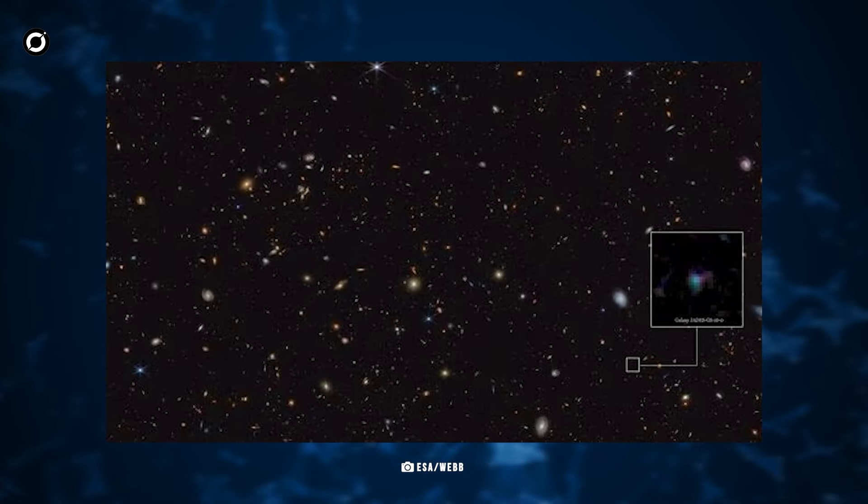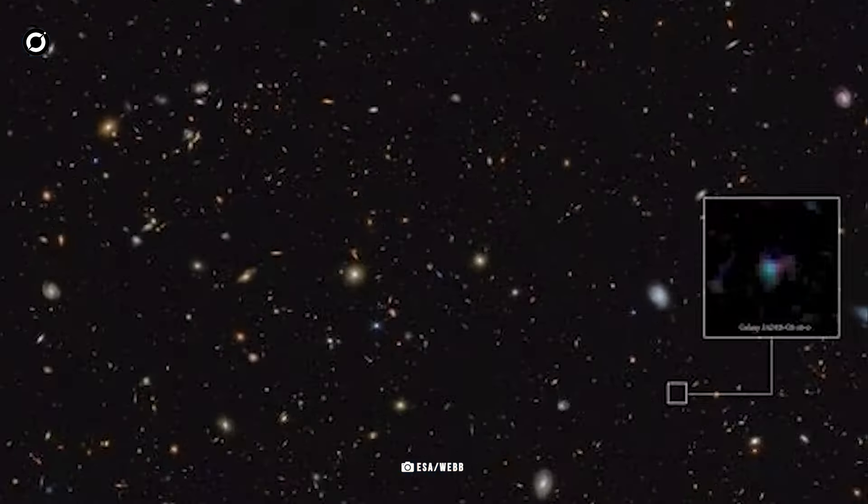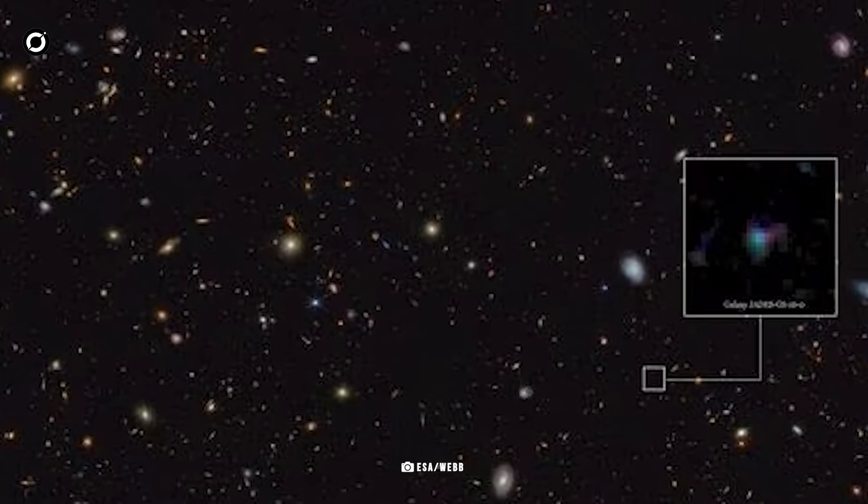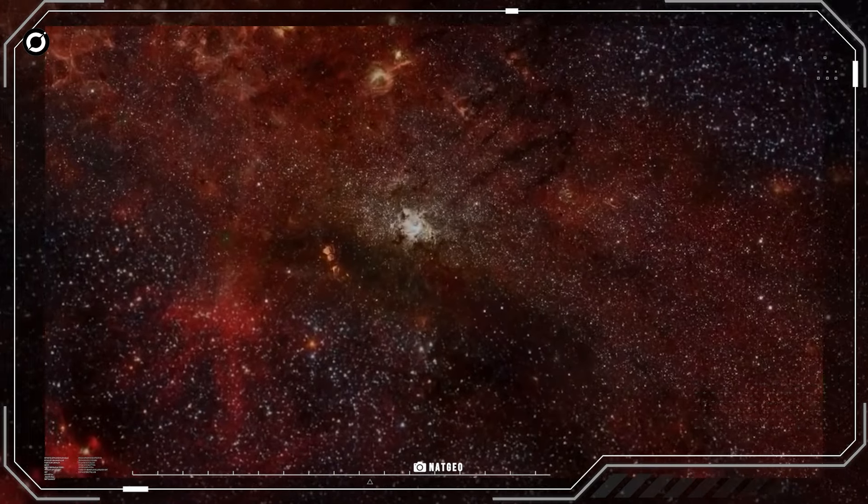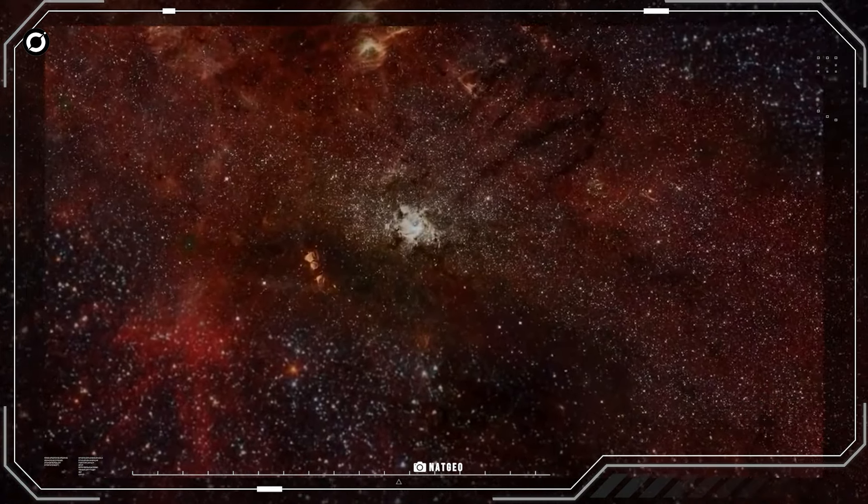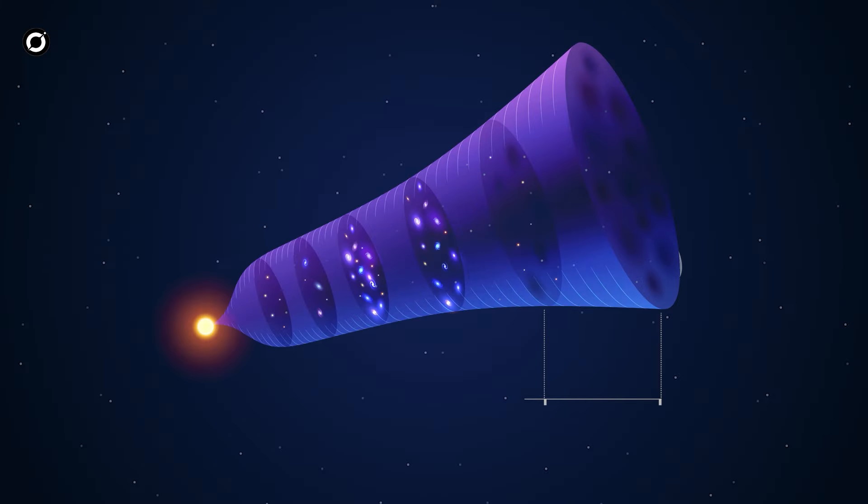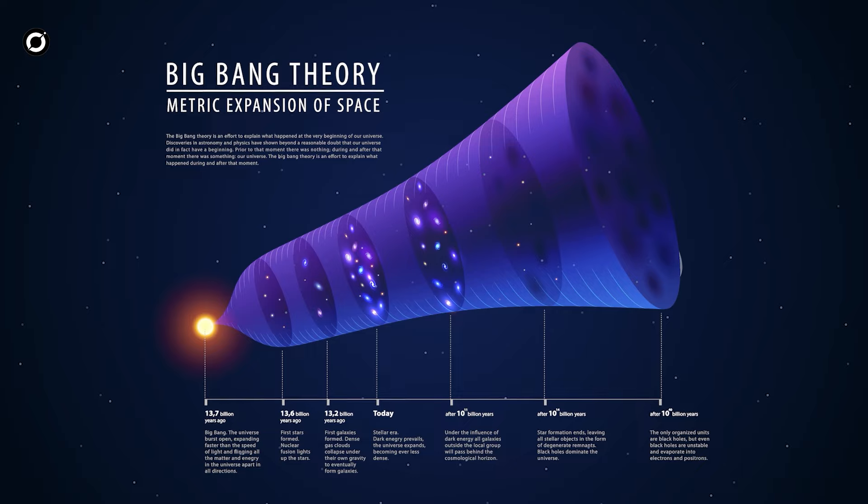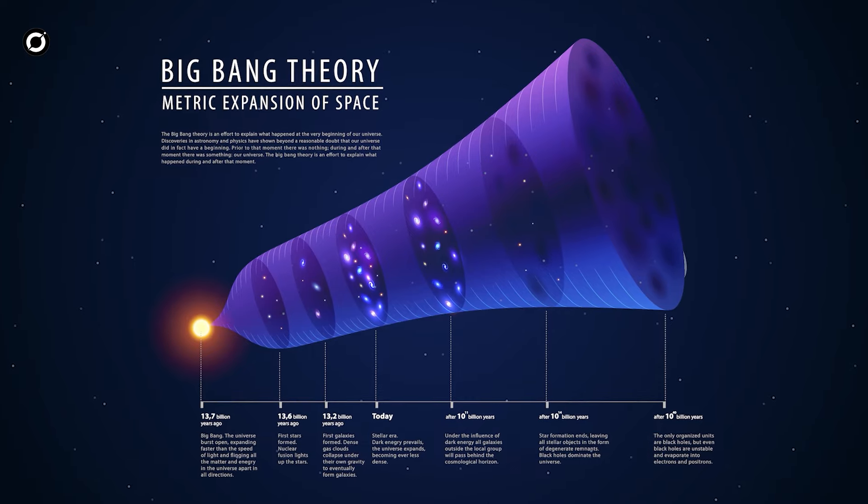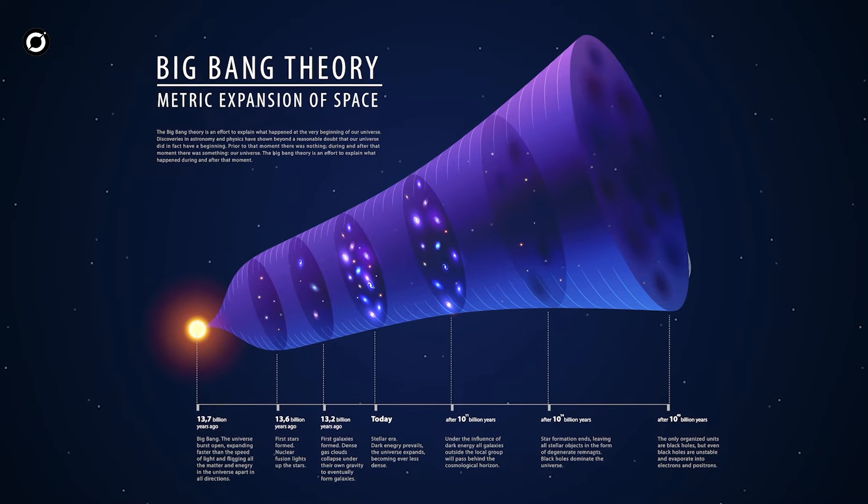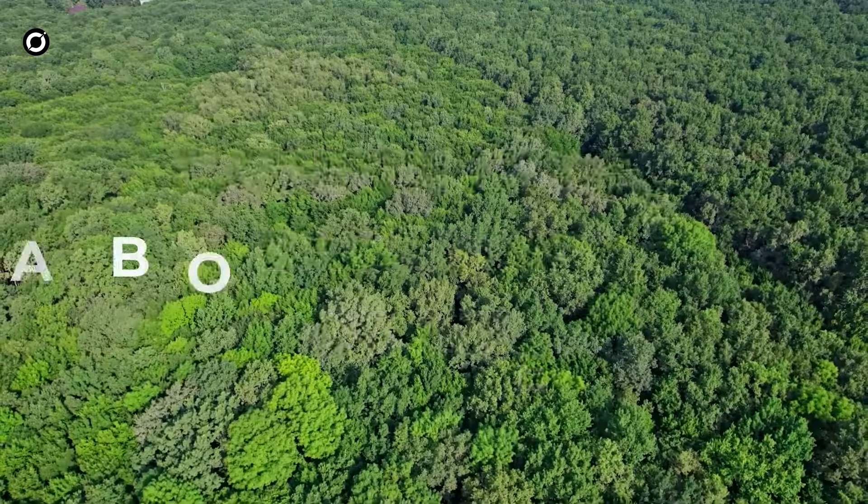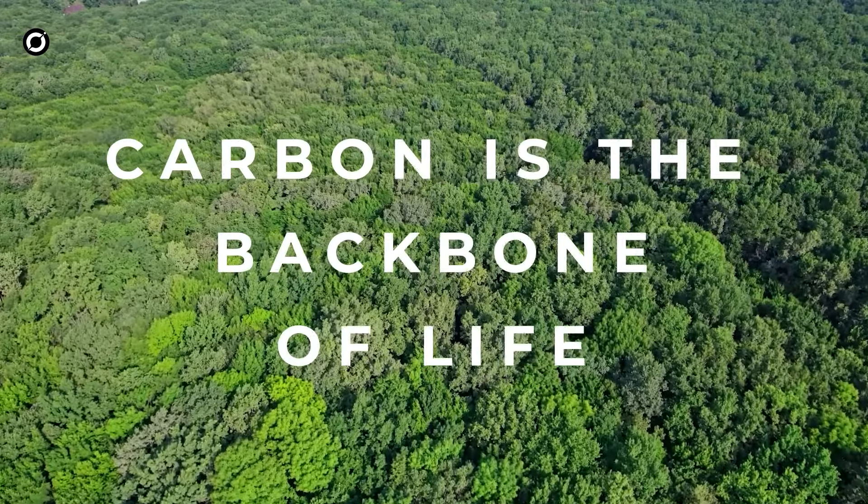James Webb Space Telescope made its first detection of diamond-like carbon dust in the universe's earliest stars. The discovery suggests that the earliest galaxies formed more quickly after the Big Bang than previously thought. But we have heard of that almost a hundred times now with a hundred different galaxies that Webb found. So what sets this one apart? The fact that carbon is the backbone of all life.